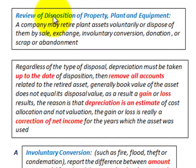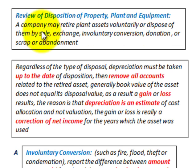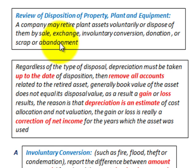What we're going to be looking at here is just a review of the disposition of property, plant, and equipment. A company may retire plant assets voluntarily or dispose of them by sale, exchange, involuntary conversion, donation, or scrap or abandonment. We'll be looking at a basic example for each of these cases, except for the exchange which is a bit more complicated.